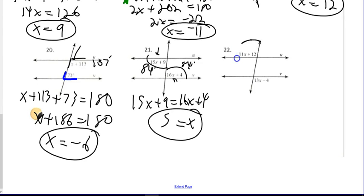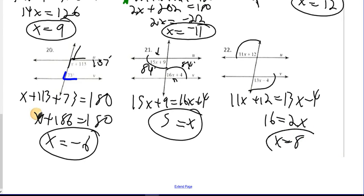Number 22. Alternate exterior angles which are also both obtuse therefore equal 11x plus 12 equals 13x minus 4. I'm going to subtract 11x to make the x positive. I'm going to add 4 to get 16. Divide by 2 and I get 8. Now, I'm going to plug it in here and here and make sure I get the same answer for both. So 11 times 8 is 88 and 88 plus 12 is 100. As long as I get 100 for the other one, I'm good to go. So, 13 times 8 is 104. Minus 4 is 100. I'm good to go. And that's it.